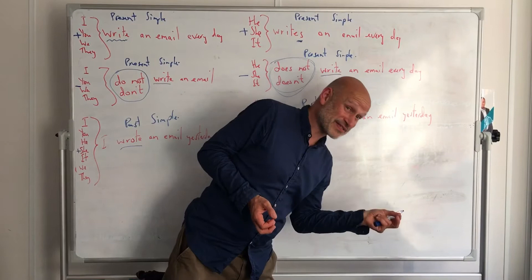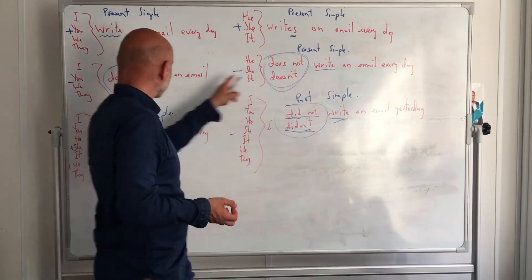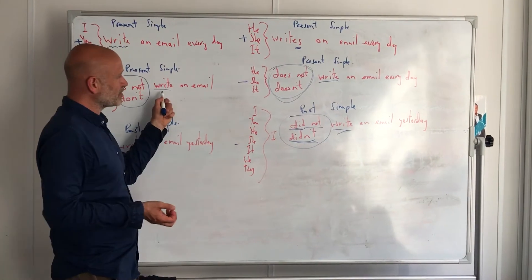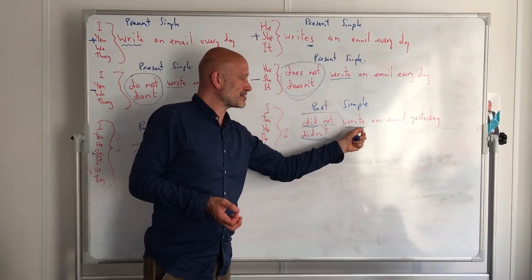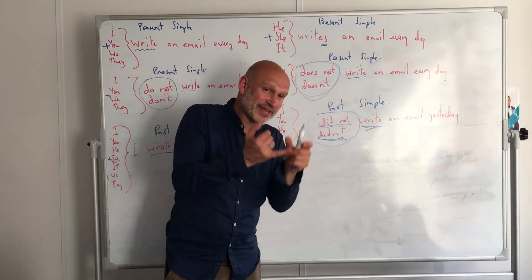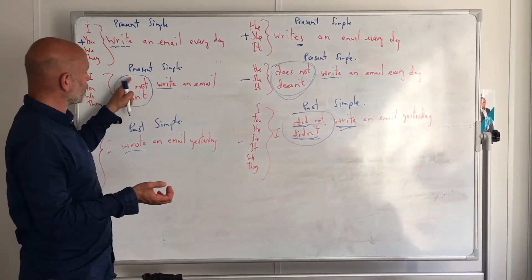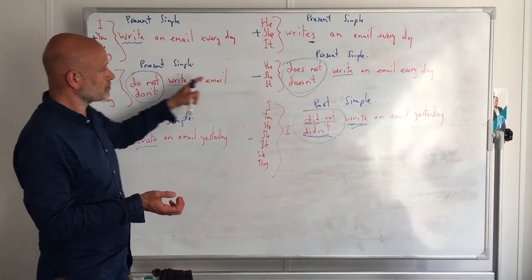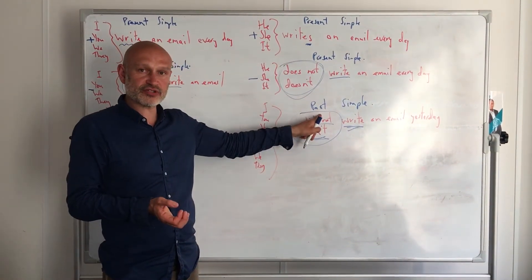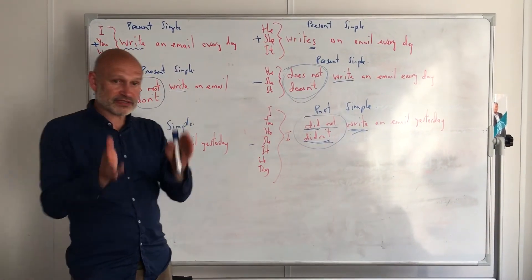Because as soon as you use this verb, doesn't matter how you use it, the main verb is always present simple first person, always infinitive. So in the negative, and later when we learn the question, again we just have to remember the auxiliary verb in negatives and questions with the main verb always being present simple first person.